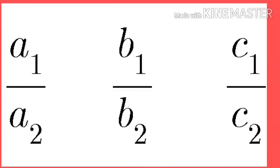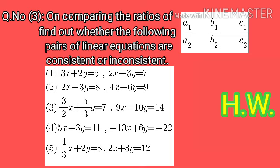You can check the ratios a1 upon a2, b1 upon b2, and c1 upon c2 to solve this question. Question number 3 parts are: (i) 3x + 2y = 5 and 2x − 3y = 7; (ii) 2x − 3y = 8 and 4x − 6y = 9; (iii) (3/2)x + (5/3)y = 7 and 9x − 10y = 40; (iv) 5x − 3y = 11 and −10x + 6y = −22; (v) (4/3)x + 2y = 8 and 2x + 3y = 12.